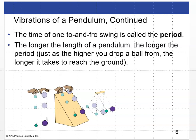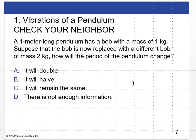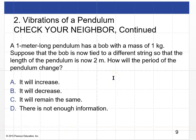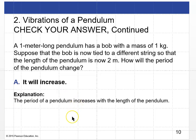The period actually works as the square root of L over G. A one-meter long pendulum with a bob of one kilogram — if that bob is replaced with two kilograms, the period will not change at all, because the period depends only on the length and on G, not on the mass. If instead the length is changed to two meters, the period will increase — the pendulum will swing more slowly, going as the square root of L over G.